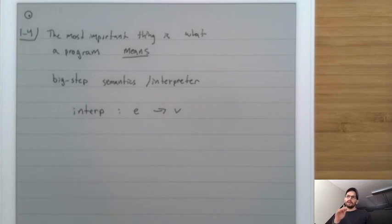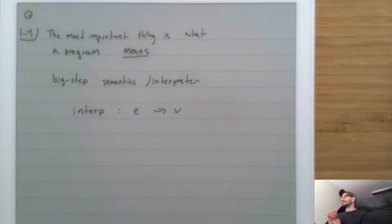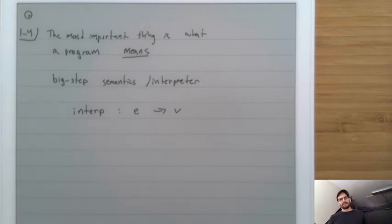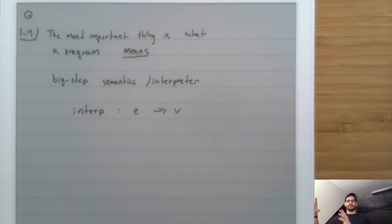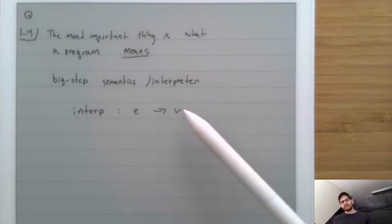In a language like C, there are programs, functions, statements, and expressions — a whole bunch of categories. In most of our languages we'll focus on expression-oriented languages with only one category. Each language defines its own concept of what a value is. For example, running an HTML program produces an image on screen, whereas running a C program creates some change in memory. In our language, expressions always produce a number as their meaning.